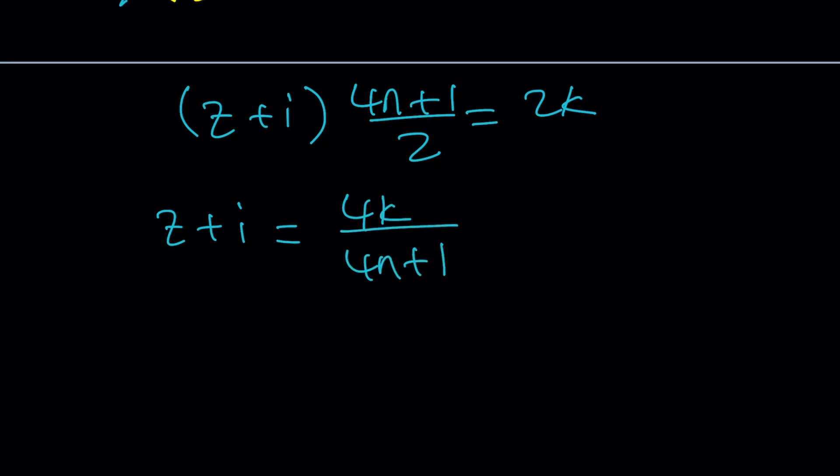Cross multiply and divide: z plus i is going to be 4k divided by 4n plus 1. This is something that we see very often with complex numbers. There are two different integers, not necessarily equal. We have an interesting pattern. For example if k and n are both zero then we get zero which should make sense.